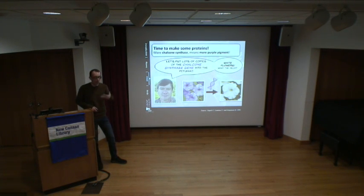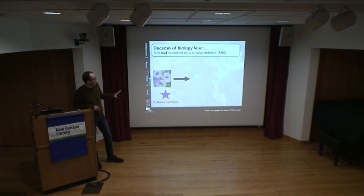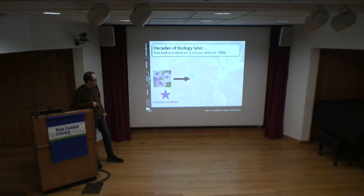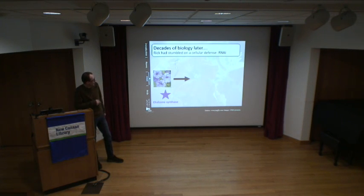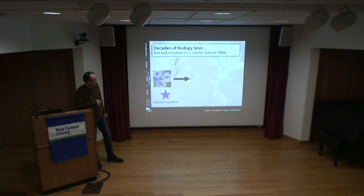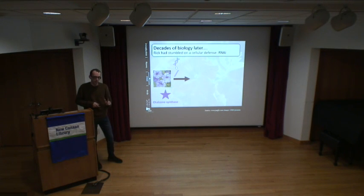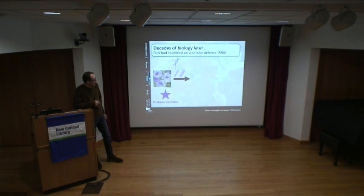A couple of decades of work from labs around the globe — a Nobel Prize was awarded for this work — eventually figured out what happened. What Rick had stumbled upon was RNA interference, a type of cellular defense. He had put in a gene that was just a little bit off, and in addition to making the normal mRNA intermediary, it also made something that contained the same information but looked slightly different — different in a way that the cell recognized as viral material.